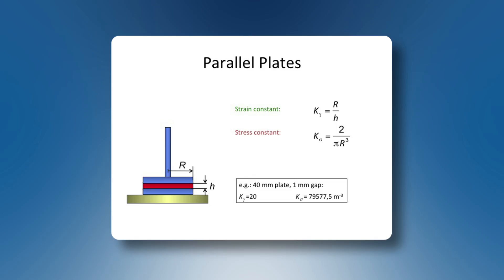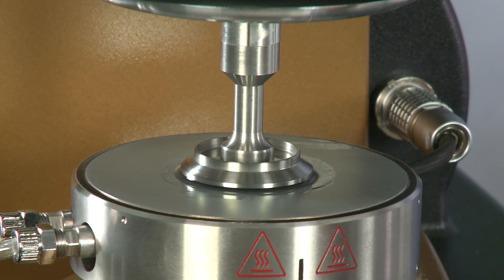An example for a 40 mm plate in diameter and a 1 mm gap, k gamma will be 20 and k sigma will be about 80,000. I have filled in the silicon oil,